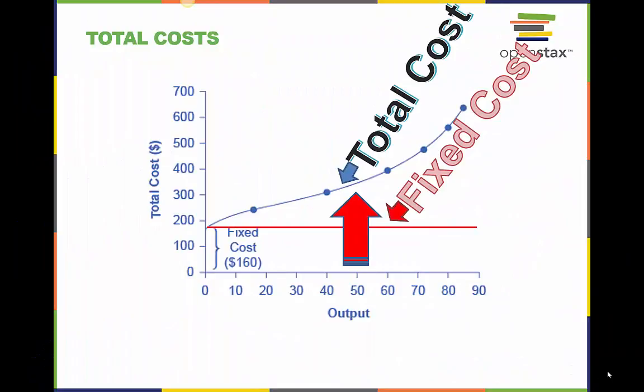At zero production, the fixed costs of $160 are still present. As production increases, variable costs are added to fixed costs, and the total cost is the sum of the two.